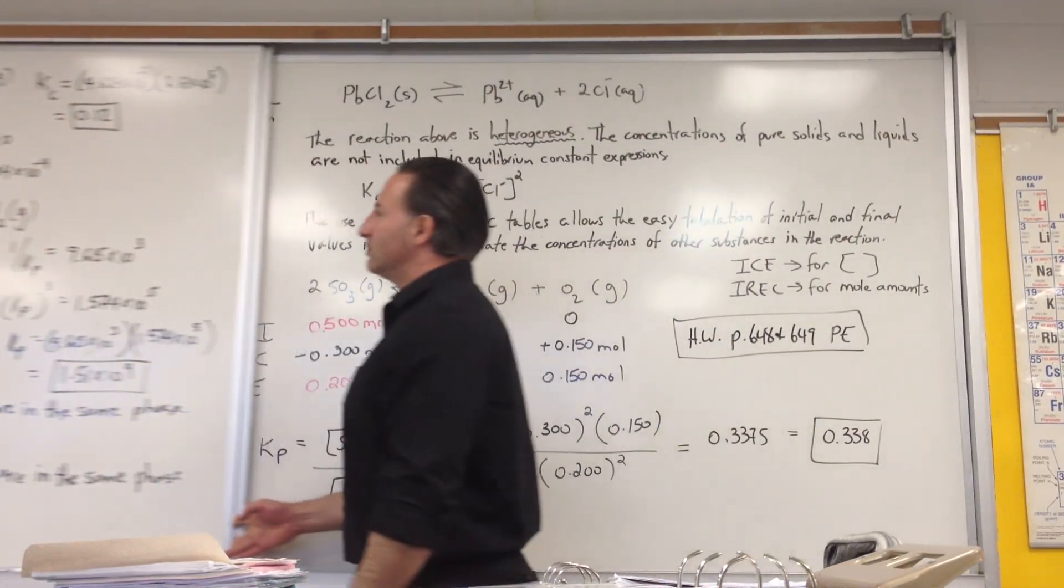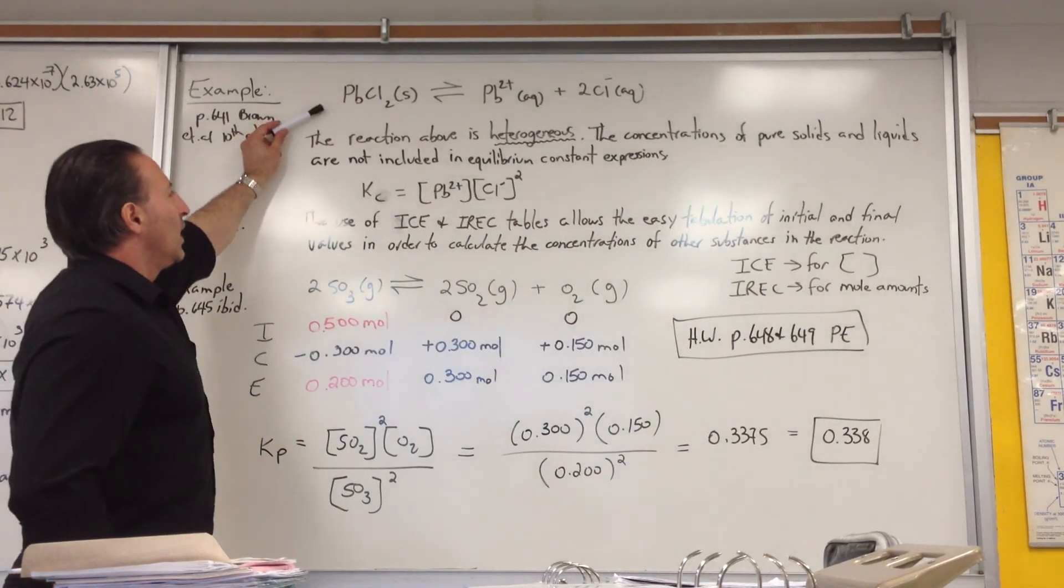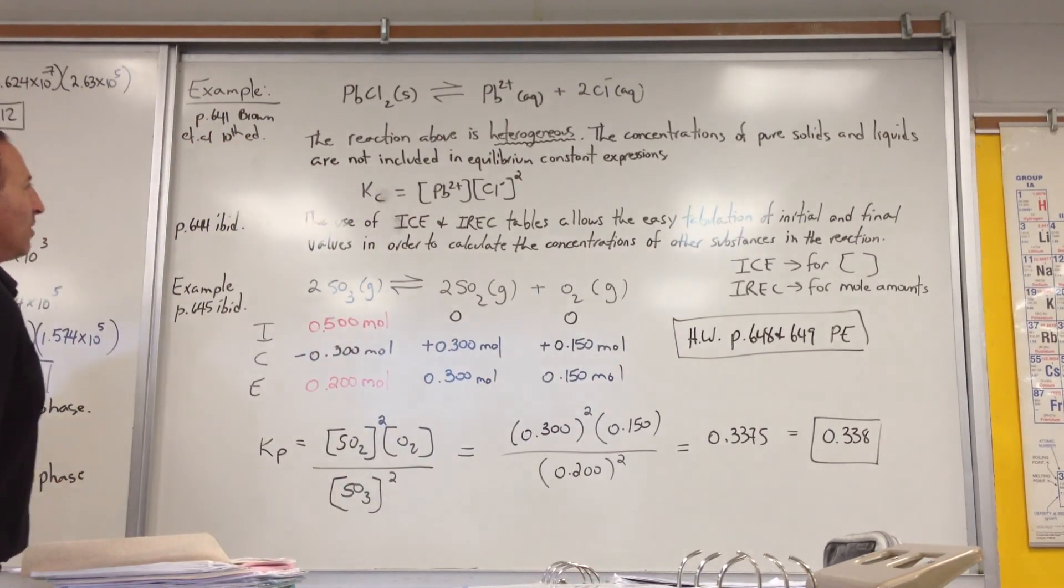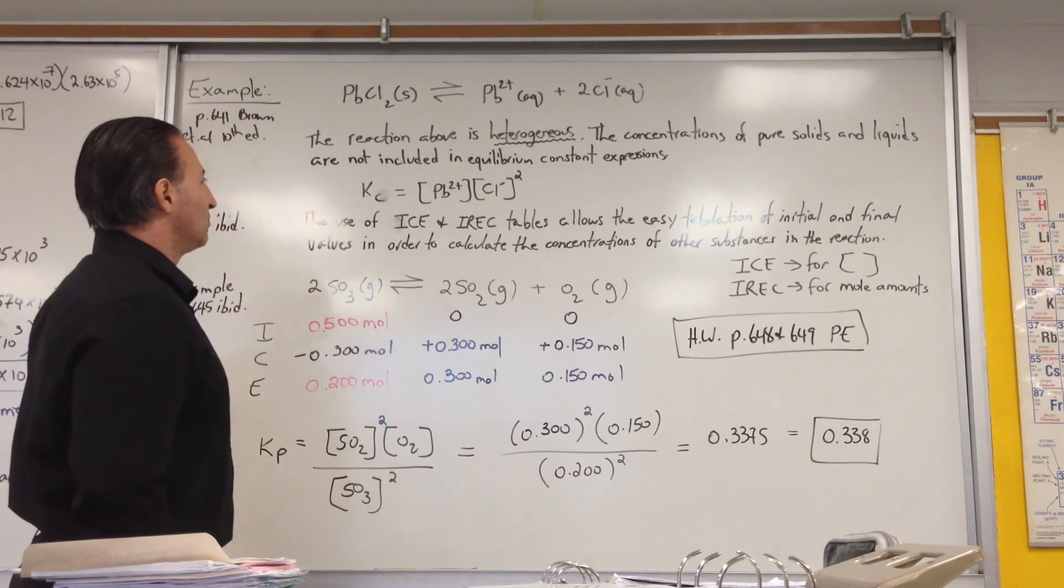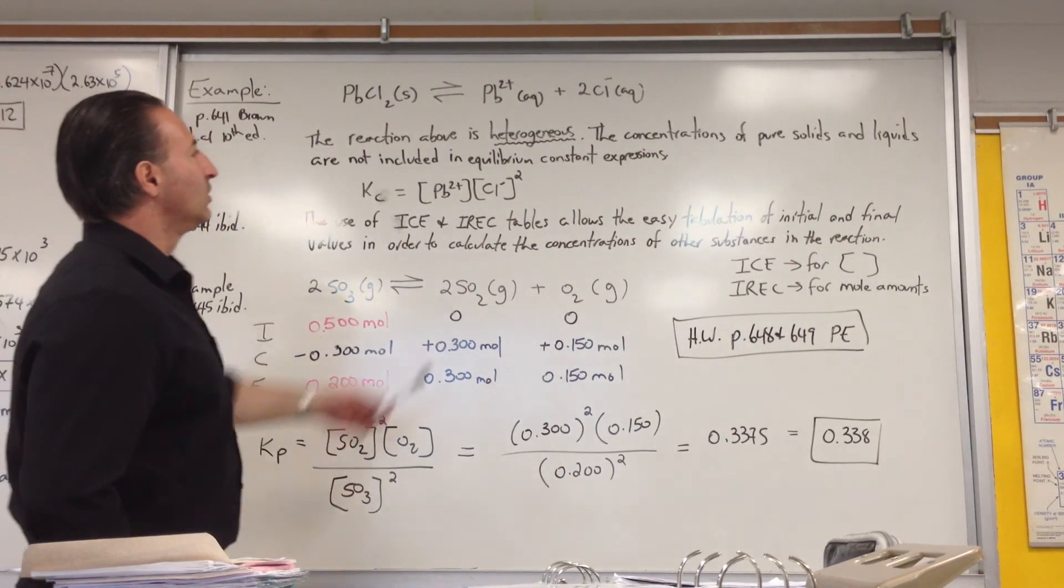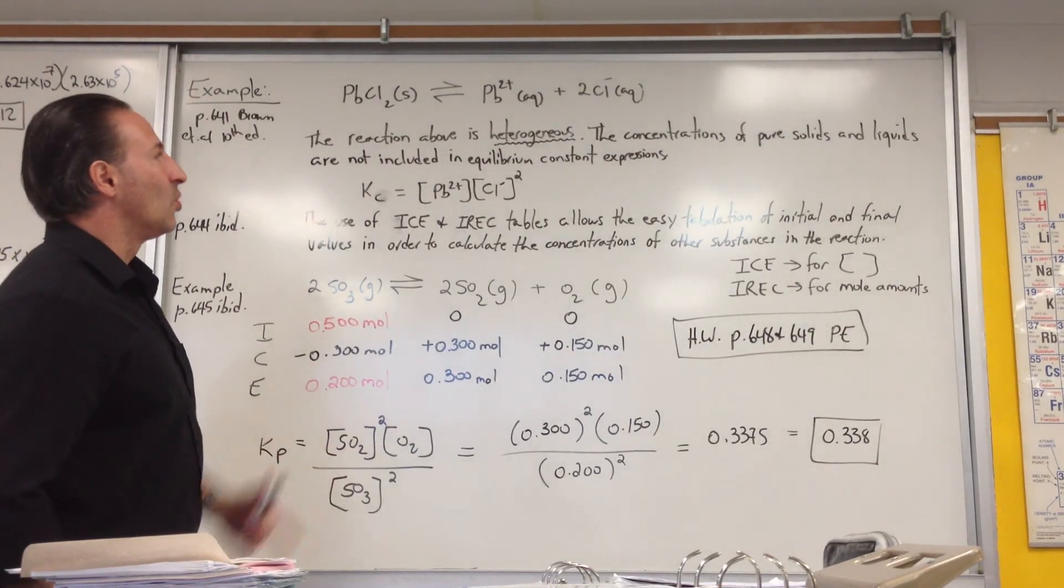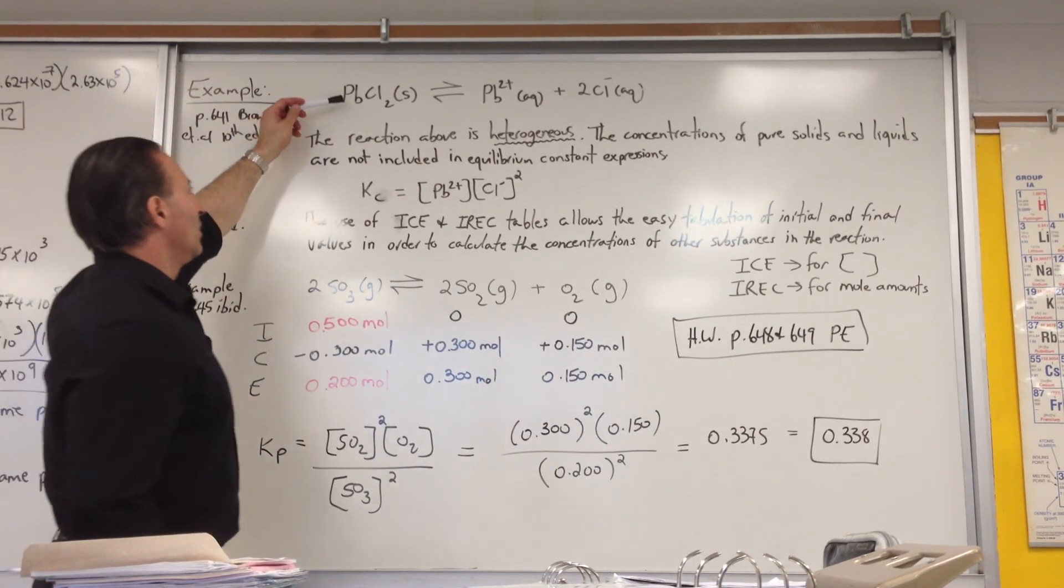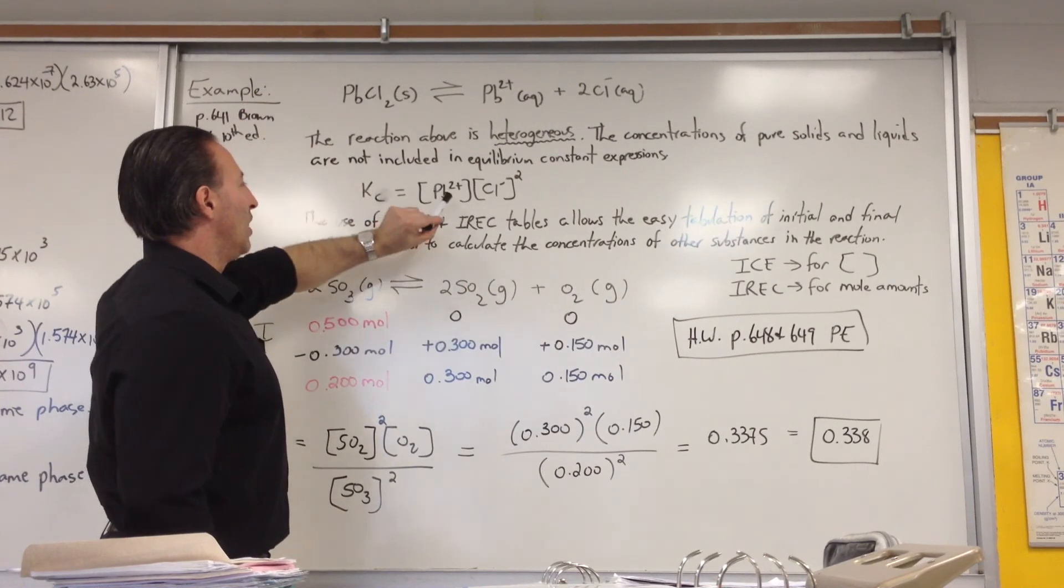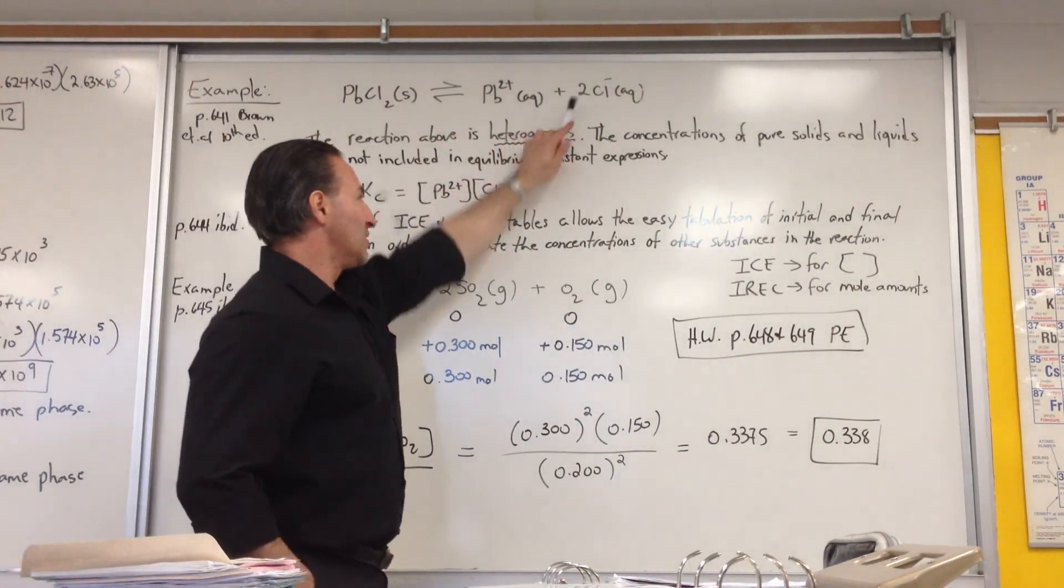Here's an example. This is from page 641 of Brown. Lead chloride will dissolve into plumbous cations and chloride anions. The above reaction is heterogeneous because there is a solid phase and there are two aqueous substances. But when you write the equilibrium constant, you only include things that are in the aqueous phase or gases. You don't include pure liquids or solids. So in the case of this reaction, which would be products over reactants, because the reactant is a solid and tends to remain at a constant concentration, you only put lead and chloride in the equation. Remember that you take coefficients and place them as powers.